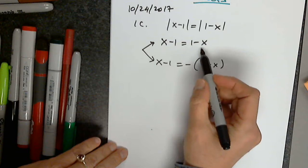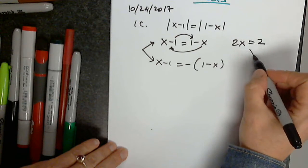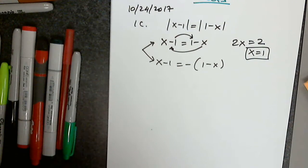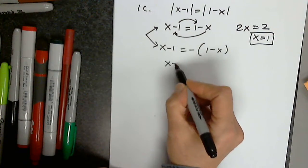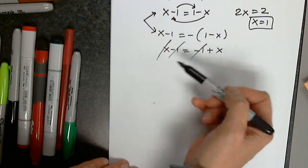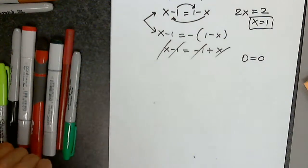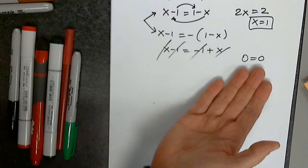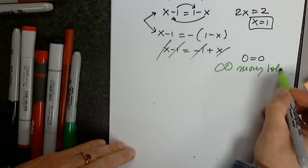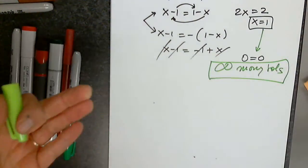So when I solve the first one, I move x to the other side, I get 2x. I move 1 to the other side, and I get 2, so x equals 1. Now, x minus 1 equals negative 1 plus x. You add 1 to both sides, you subtract x from both sides, you get 0 equals 0. This is good, but it's not good enough — you have to write the conclusion. Infinitely many solutions. I don't have to include x equals 1 here because it's already included in the infinitely many solutions.